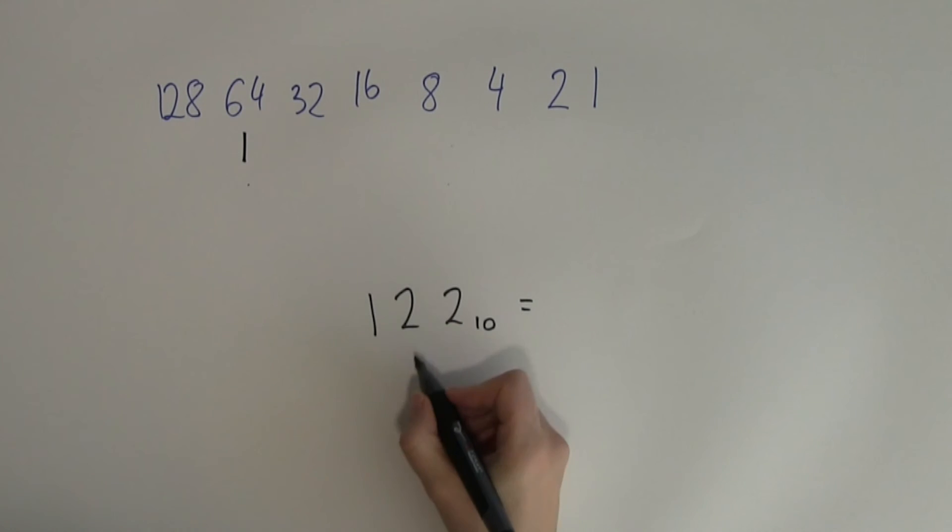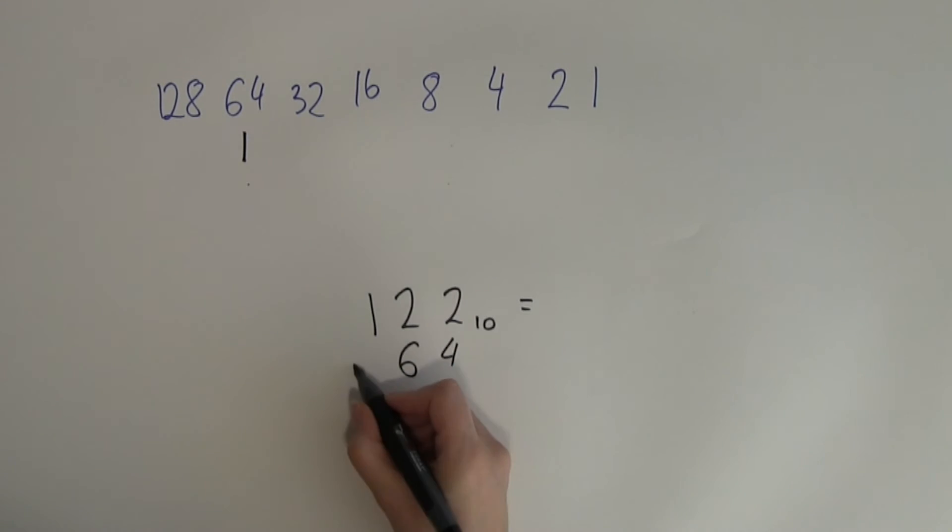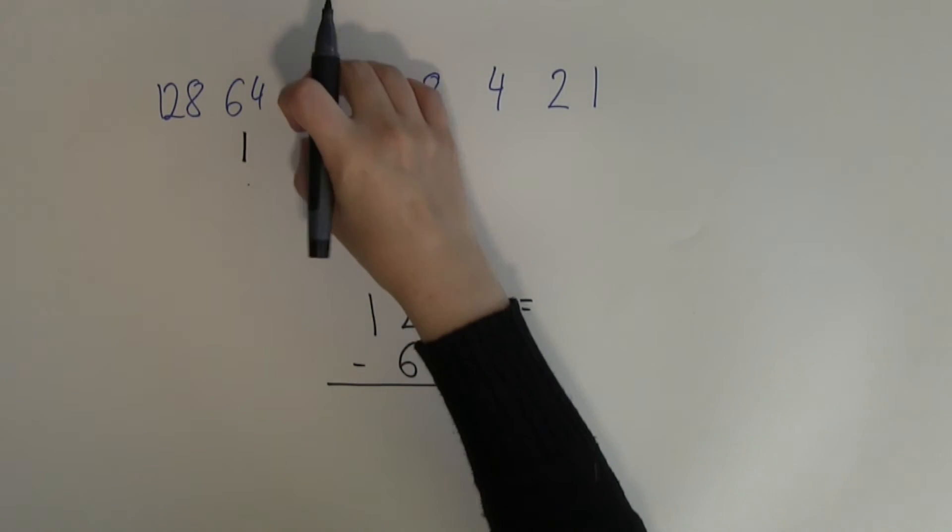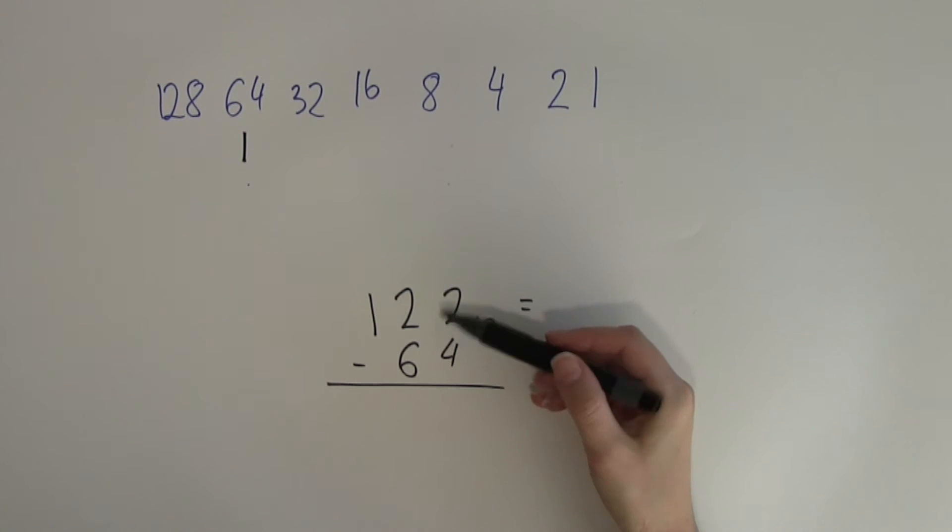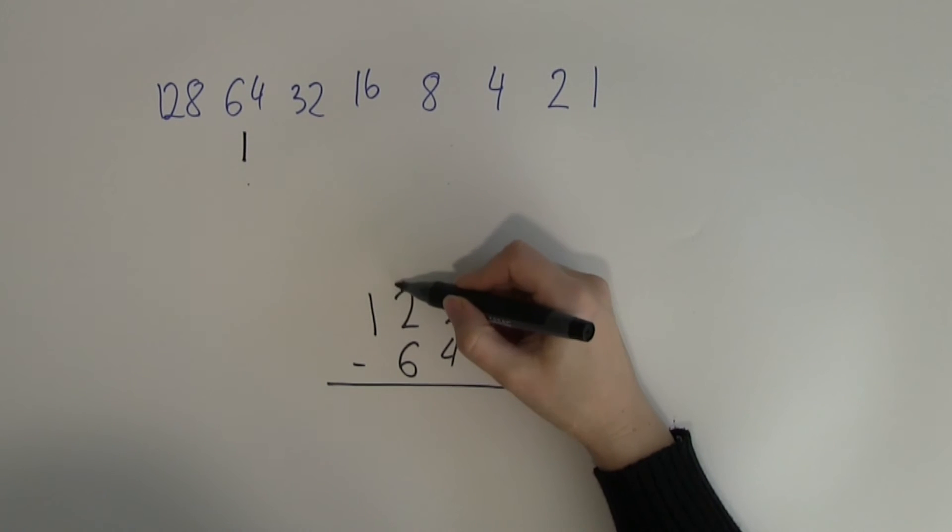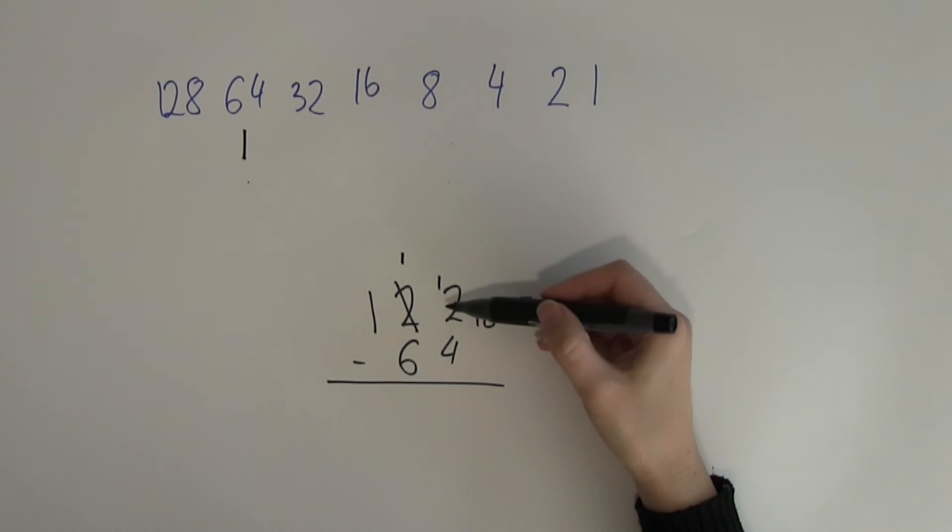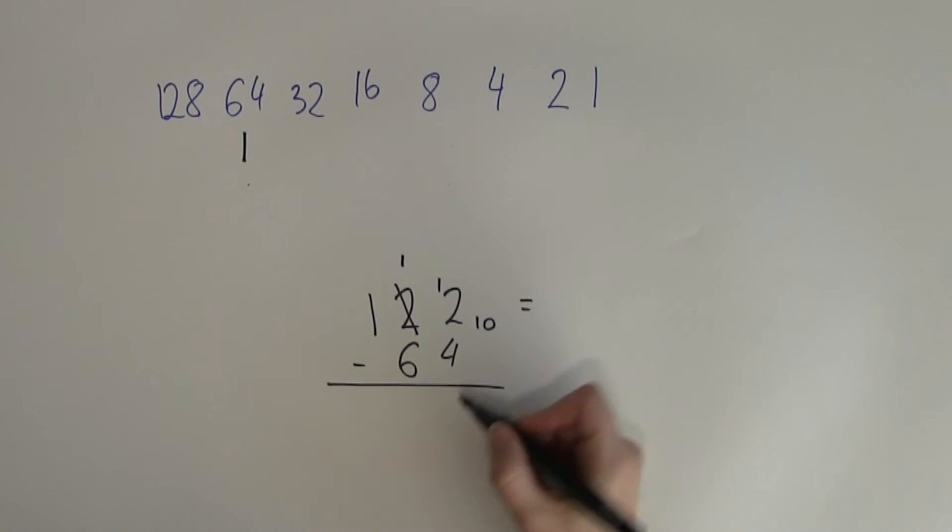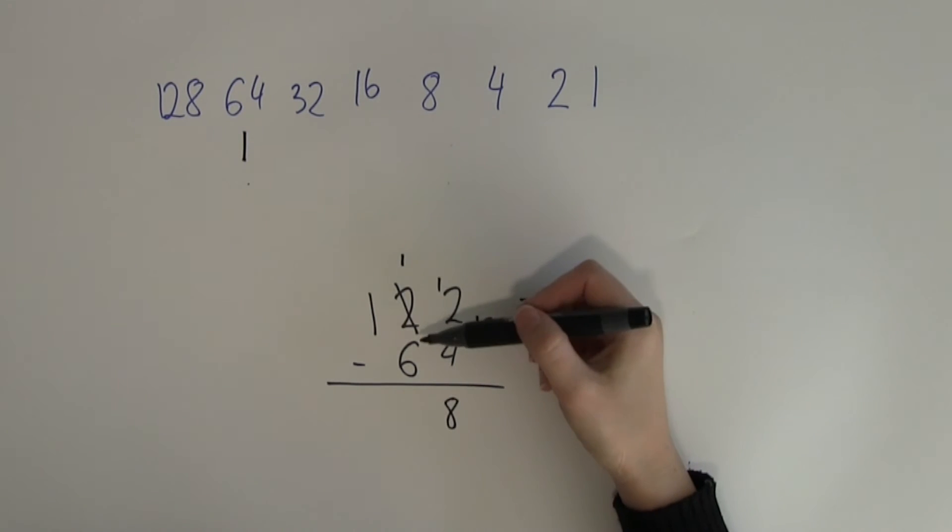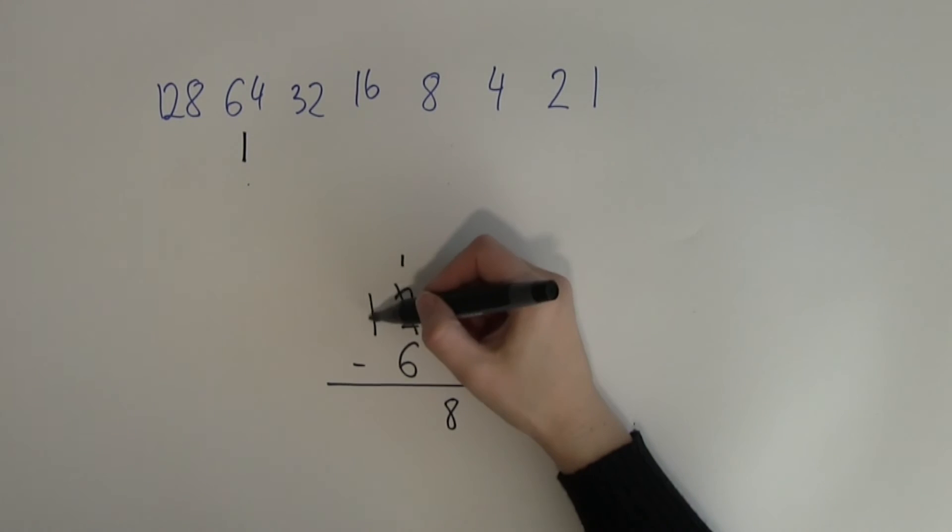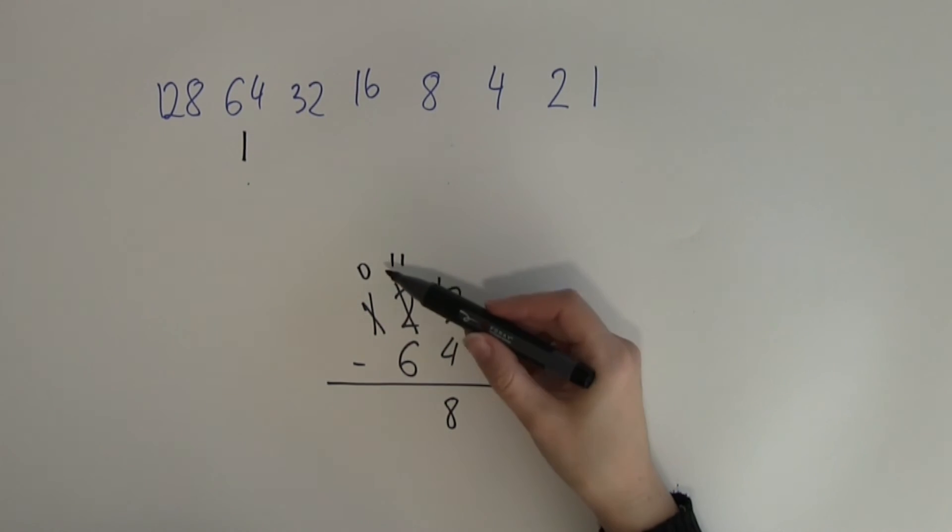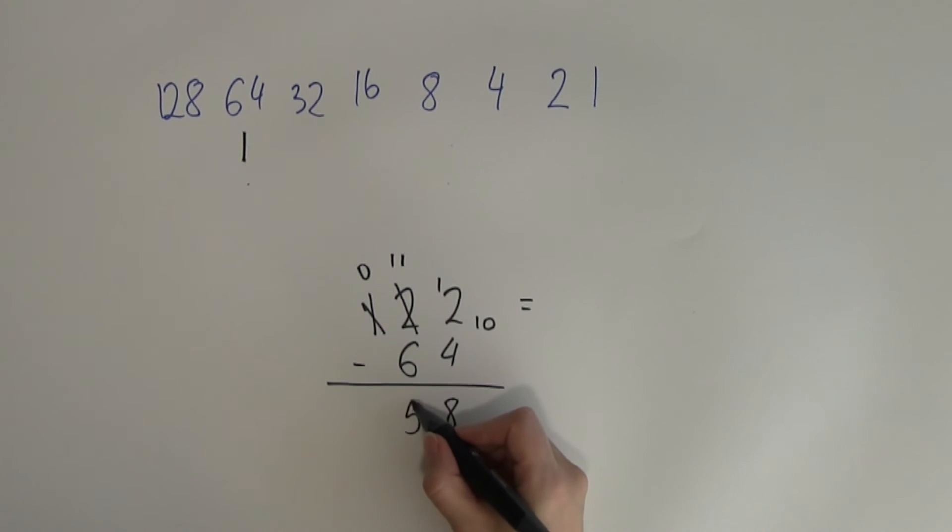64 will definitely be used. What's the remainder? How much more do I need to take out from these place values? 122 minus 64. 4 is too big for 2 to be taken away from, so I need to borrow from here. Therefore, 1 stays here and then 12 appears here. The difference between 12 and 4 is 8. Again, I will need to borrow because 6 is too big for 1. So, 0 will be here, 11 will be here and 11 minus 6 is 5. So, 58 is the remainder.